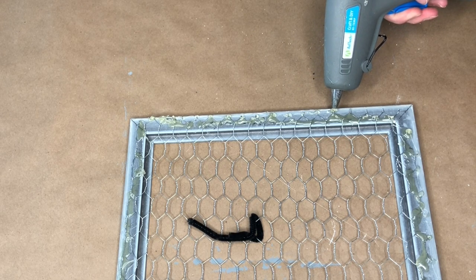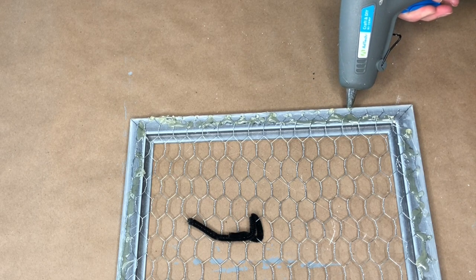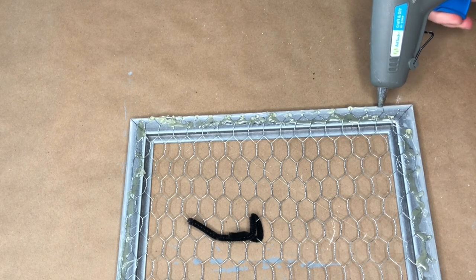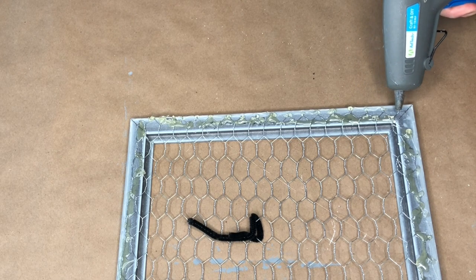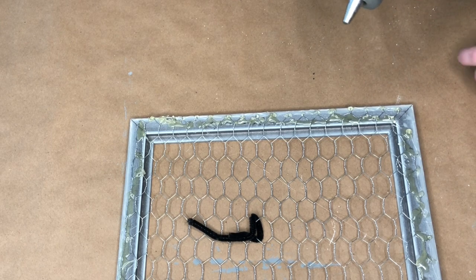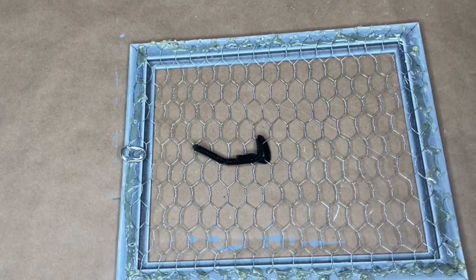So I just went over all those little pokey sharp points with a glue gun and it kind of created this barrier between the sharp chicken wire and my wall. So this worked really well. You could also put down some felt fabric over top of it, but the easiest way was to just go over it with some hot glue.